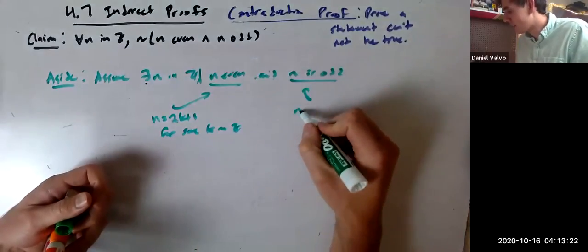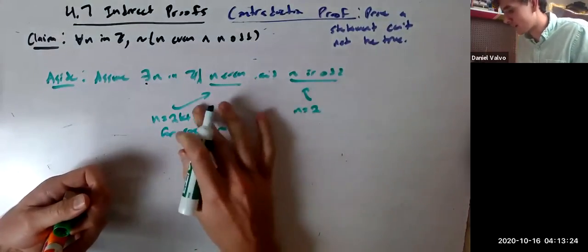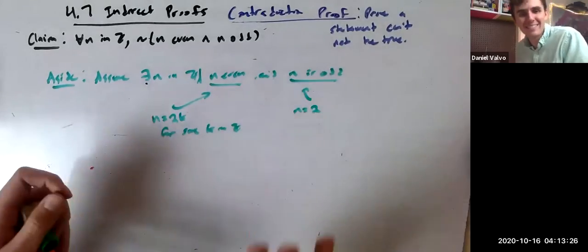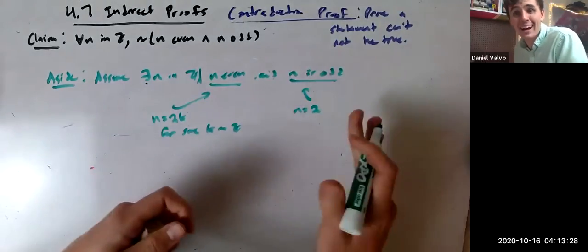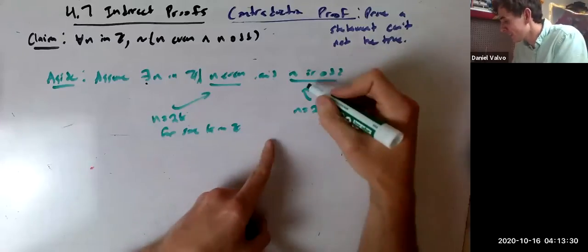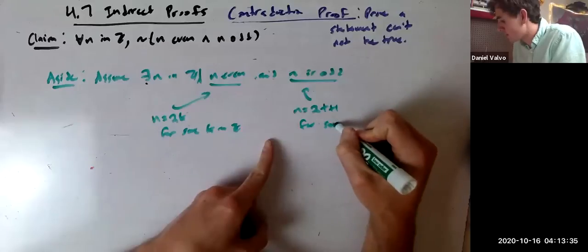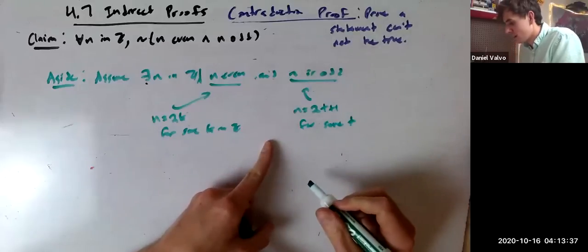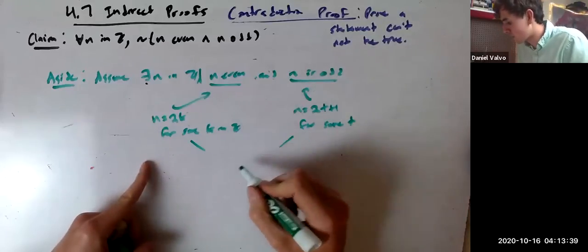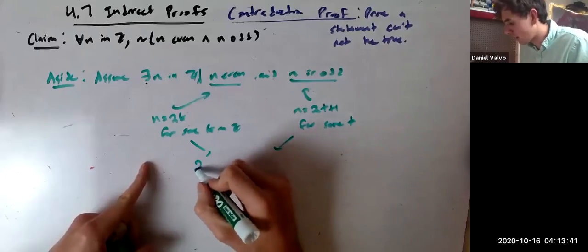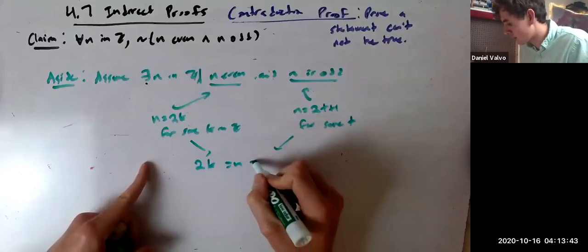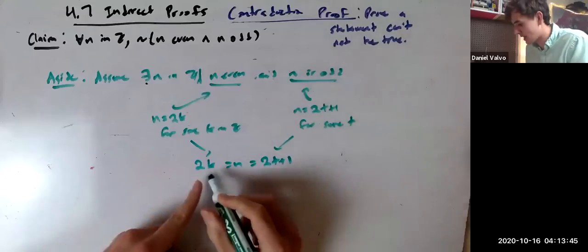Knowing N is even means that N equals 2K. Even is 2 times something, odd is 2 times something plus 1. Knowing N is odd means N equals 2T plus 1 for some T. If we know these two things and put them together, 2K must equal N which equals 2T plus 1. So they must equal each other.